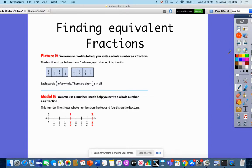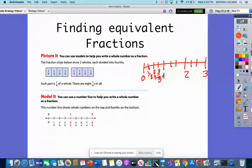So for our example here, it says you can use models to help you write a whole number as a fraction. Now we kind of talked about this before when we were talking about our number line where we had, let's say, I think we had thirds. And so this was 0, 1, 2, 3. And so we would say this was 1 third, 2 thirds, 3 thirds.